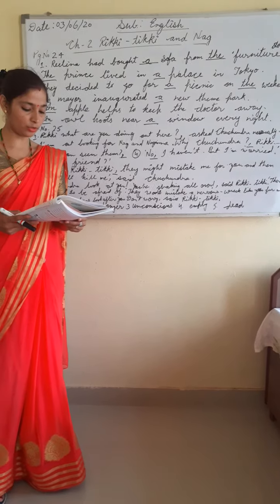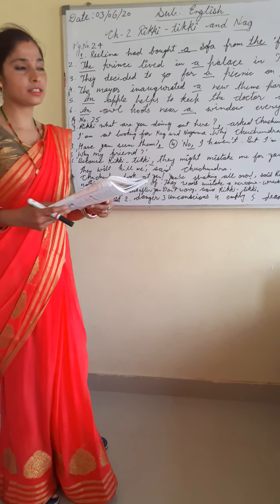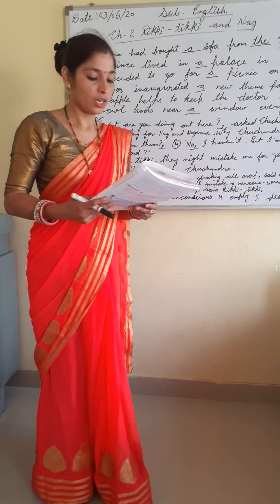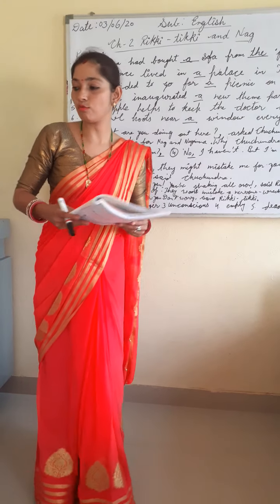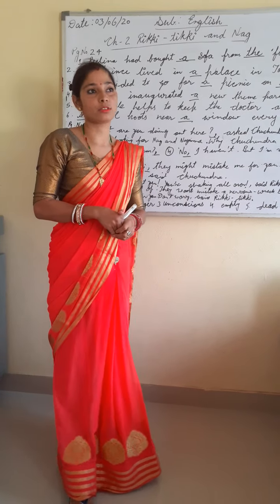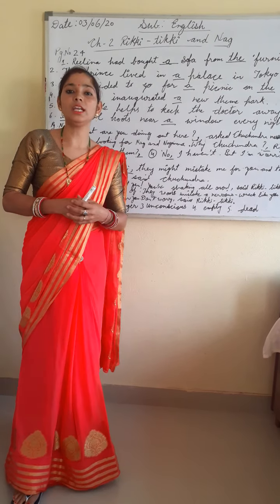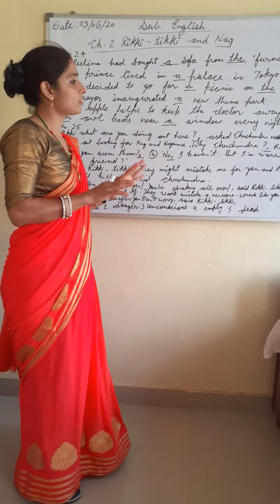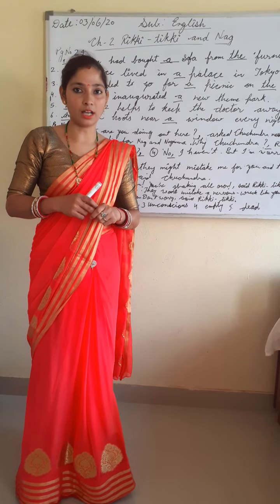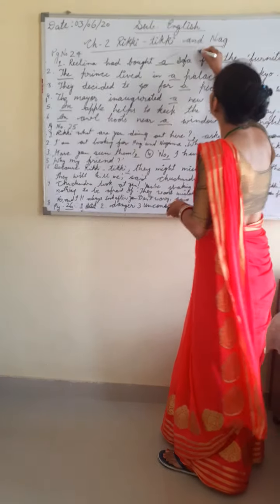On page number 24 there are articles — which we have used before nouns. The instruction says: read the sentences and fill in the blanks with the correct articles. Articles are words used before nouns. There are two types of articles: definite — 'the' — and indefinite — 'a' and 'an.' First, you have to focus on two things: where we use 'a' and where we use 'the.' We use 'a' with a consonant sound.